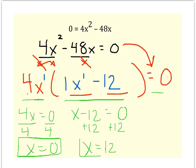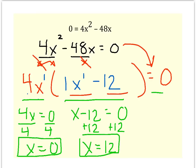So these are my two answers and that tells me that if I were going to graph my parabola, my u-shaped curve, it would cross the x-axis at 0 and at 12.